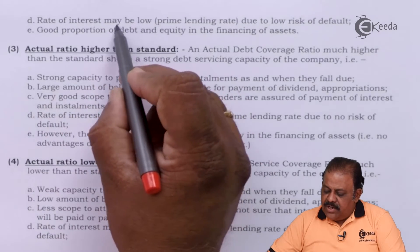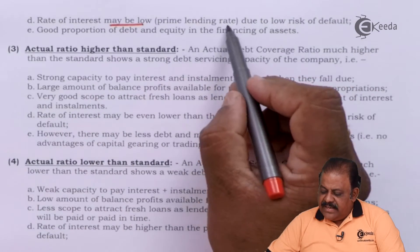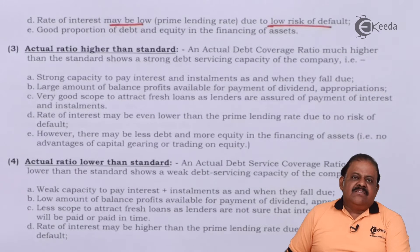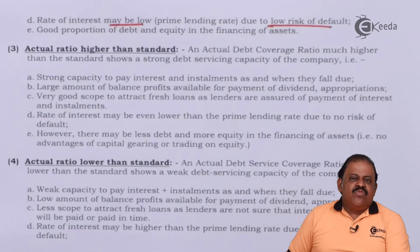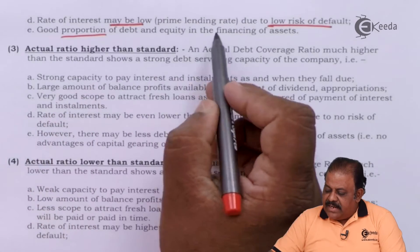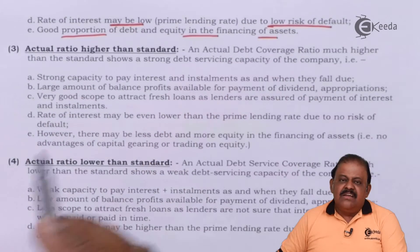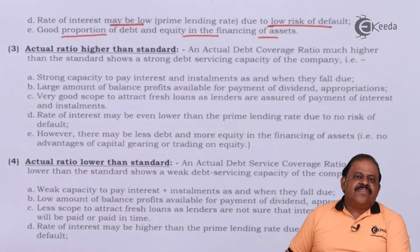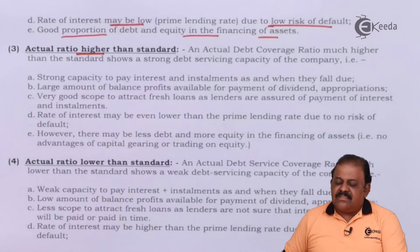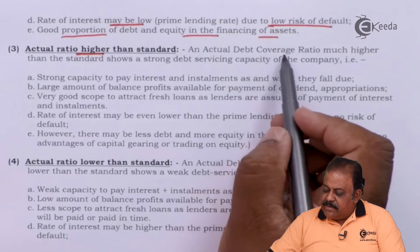If a company's ratio matches the standard, creditors or banks are more interested in giving loans because they are assured of getting back both interest and principal. The rate of interest may be low — at prime lending rate — due to low risk of default. There is also a good proportion of debt and equity in financing the company's assets.